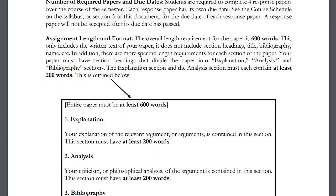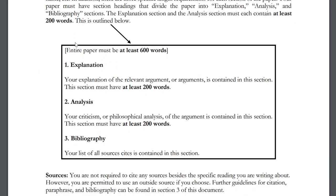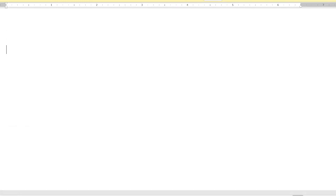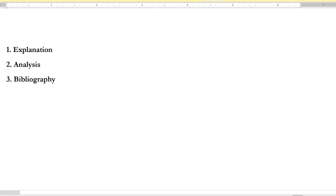For many papers it'll probably be necessary to go above 600 words. The paper is divided into three sections: an explanation section, an analysis section, and a bibliography section. The very first thing I'd recommend is opening a Word document and writing out those section headings before anything else. They should appear exactly as: one, Explanation; two, Analysis; three, Bibliography. Not having section headings will result in points deducted.